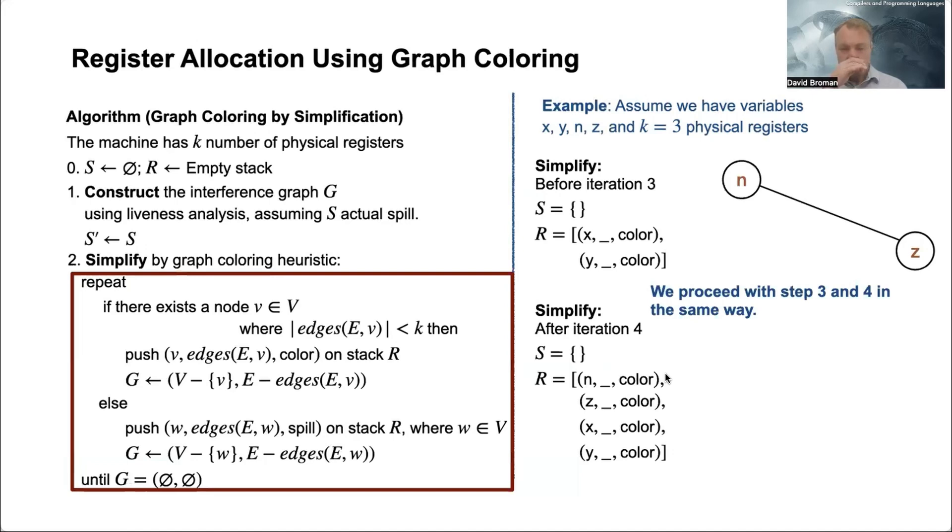And then we have just n left without edges, and then we push that. So we have this overall now simplified graph where the graph does not exist anymore, but we have pushed all the information on R.